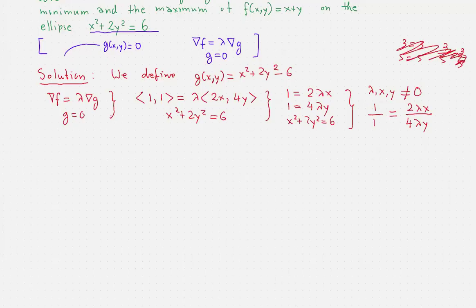And here what happens is that lambda and lambda cancel each other. And what we'll get is 2y equals x. And once we have that 2y equals x, we plug it into the constraint.